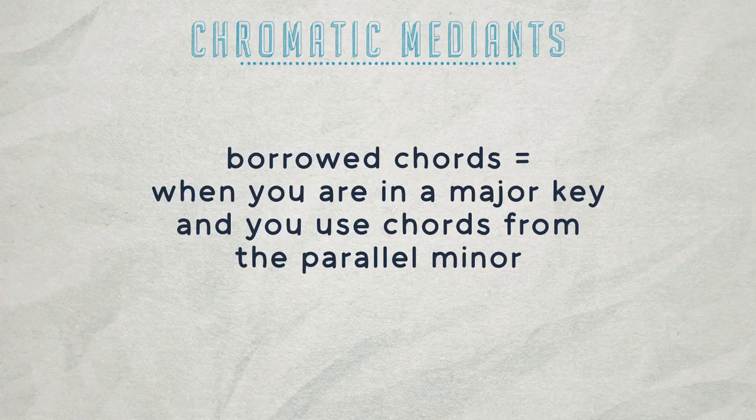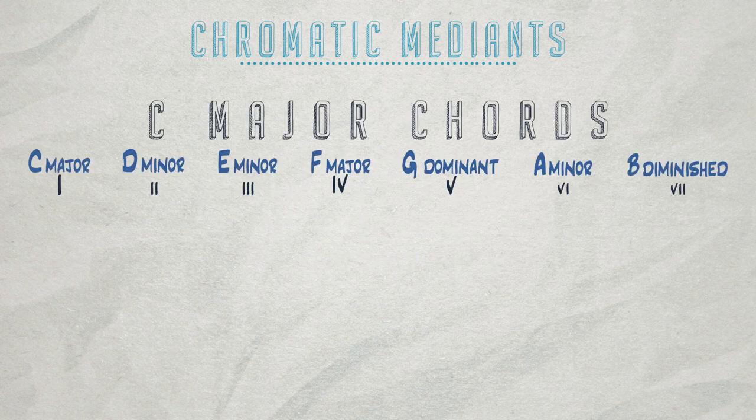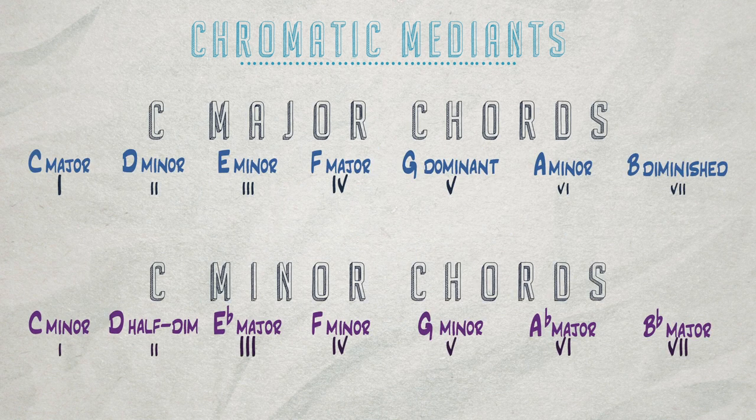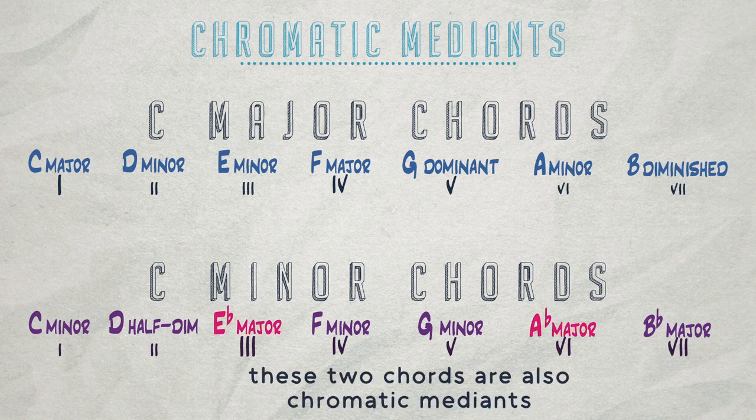This next section is on borrowed chords. You may be familiar with borrowed chords, which is when you are in a major key and you use chords from the parallel minor. These are the chords in C major, and these are the chords in C minor. And if you notice, we have a flat three chord and a flat six chord, which are two of our chromatic mediant options that we went over. You can think of these two chords as chromatic medians, or you can think of them as borrowed chords.